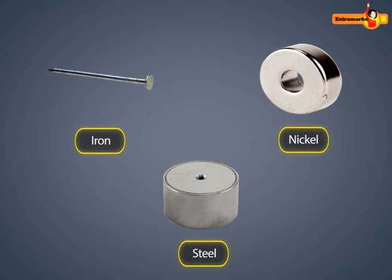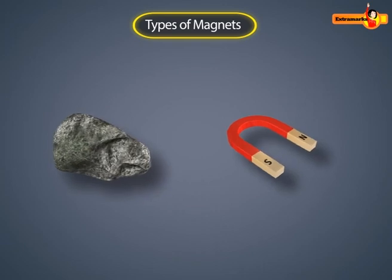Magnets have the property to attract magnetic objects such as iron, nickel, or steel. Magnets are of two types.